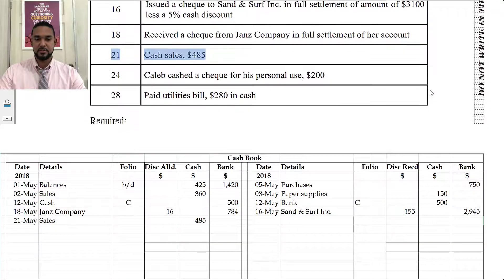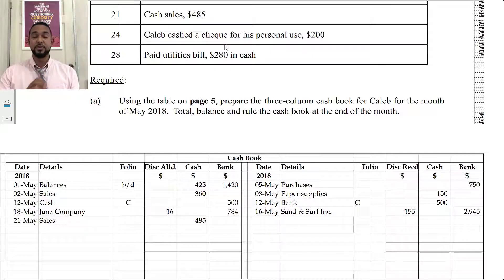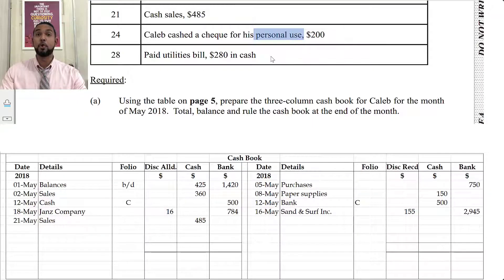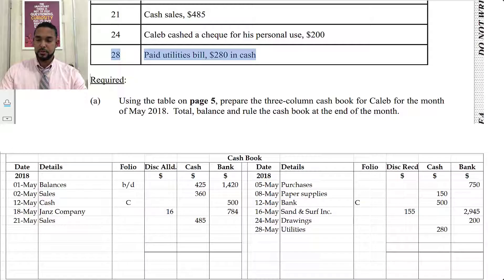Caleb cashed a check for personal use of $200 — this is drawings. He wrote a check, went to the bank, and the cashier gave him cash, like withdrawing from the ATM. Since it's for personal use, the drawings account is involved. Bank is decreasing, so we credit bank for $200, with the details being drawings. Next, he paid utility bills of $280 in cash. That's another cash payment on the credit side under cash, because cash is decreasing — to record a decrease in an asset, you credit the asset account.